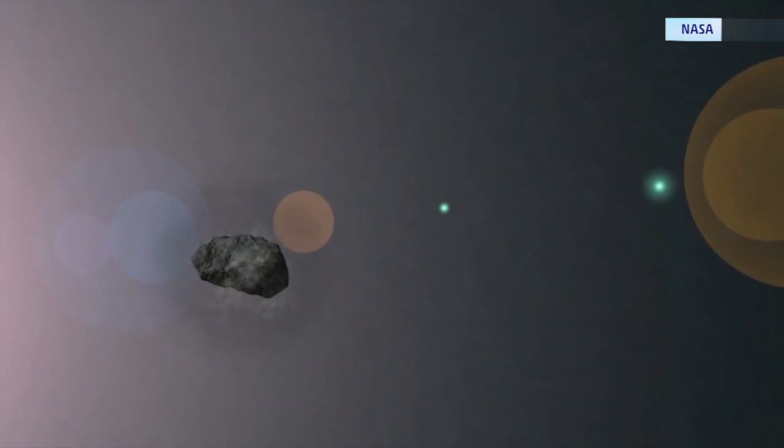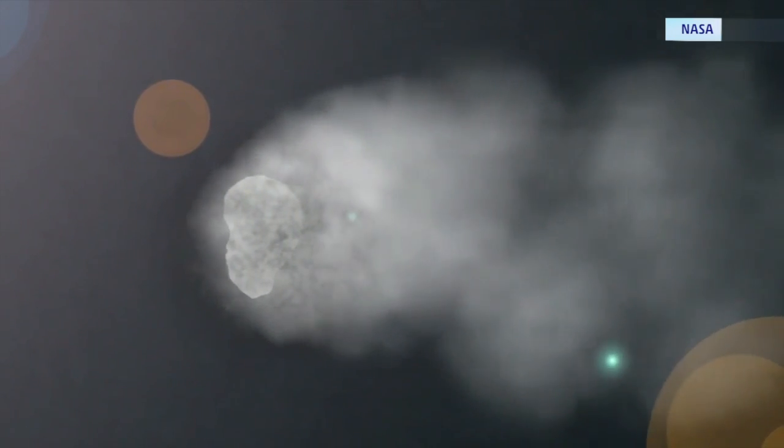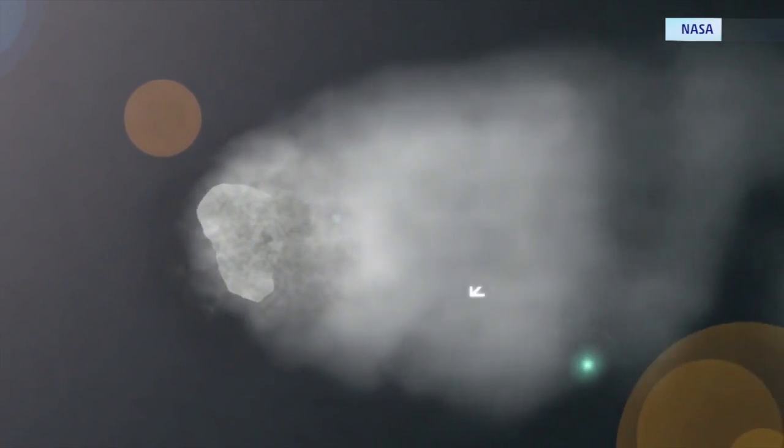Sublimate the water ice into water vapor. This will release trapped dust to create the trail of the comet. Add ultraviolet light to the dust. This will help make our comet bright.